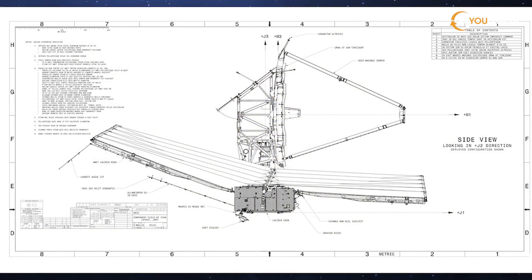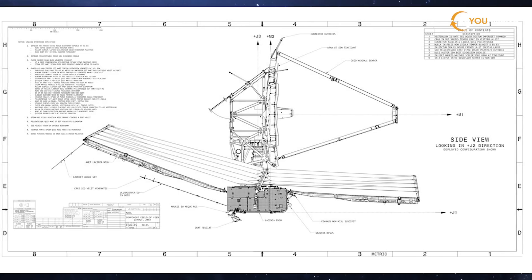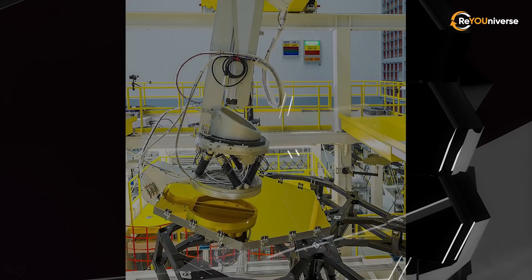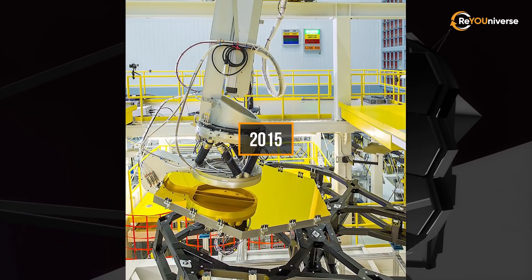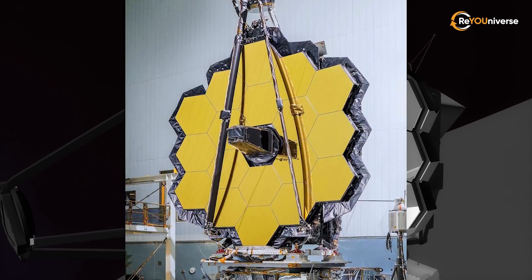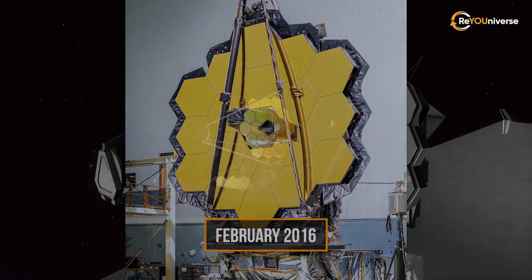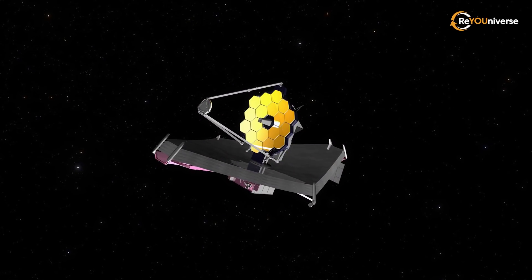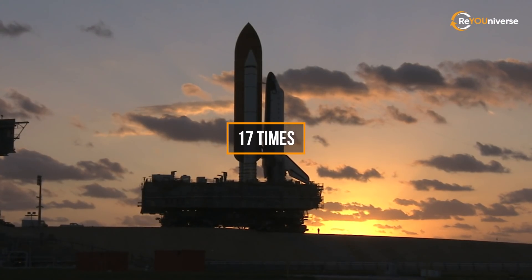But the design and construction of the telescope turned into a whole epic worthy of a full-length drama movie. The first segment of the mirror was installed on the telescope as late as the end of 2015, and the main mirror was completely assembled only in February 2016.